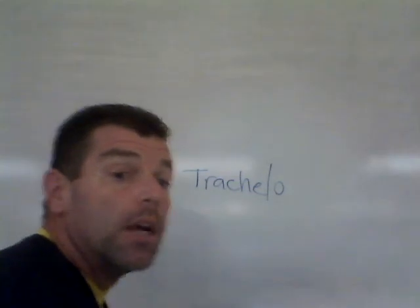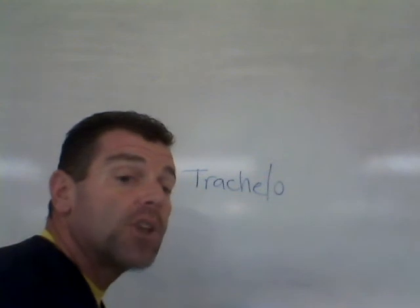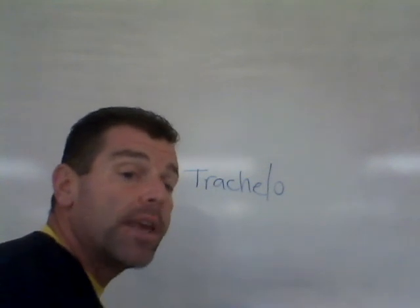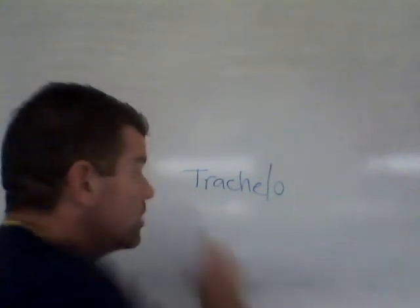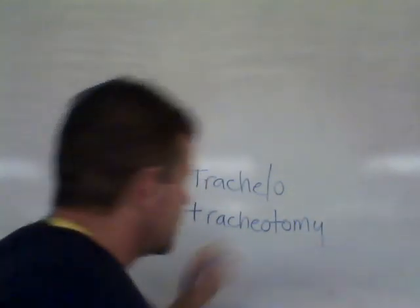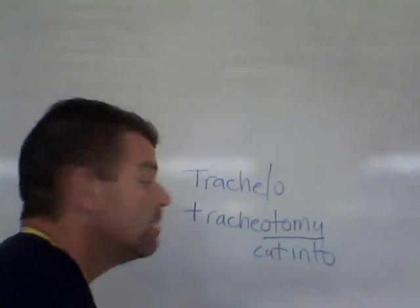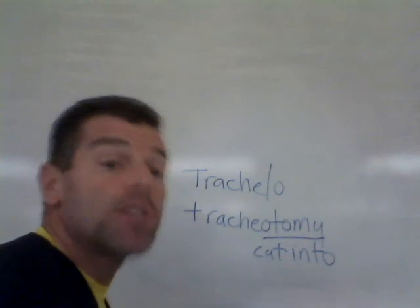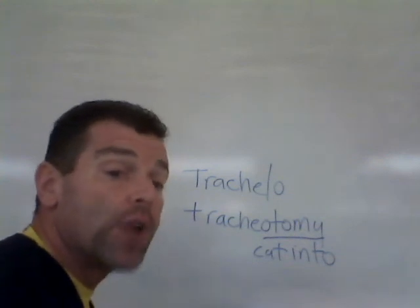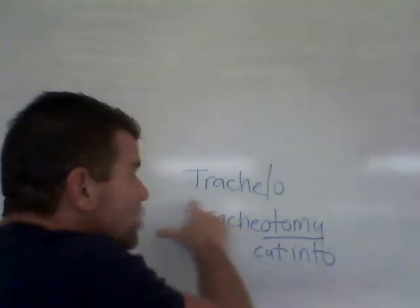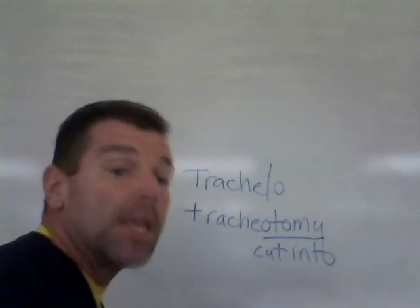'Tracheo' means trachea, our windpipe. The trachea takes air from the oral and nasal cavity and routes it down toward the thoracic cavity, where it splits into the right and left bronchus. A tracheotomy — 'otomy' is a suffix that means to cut into — so a tracheotomy is to cut into the trachea so somebody can breathe.